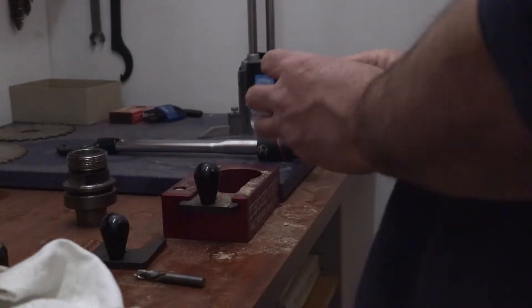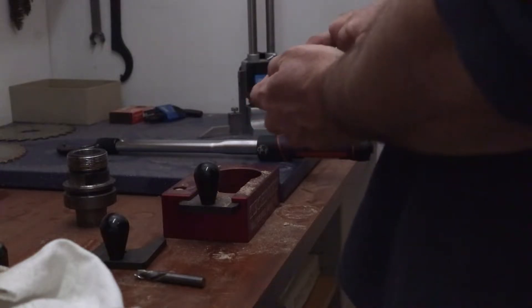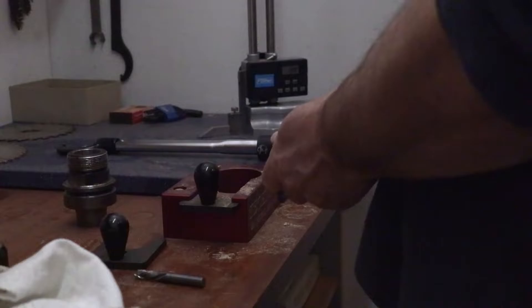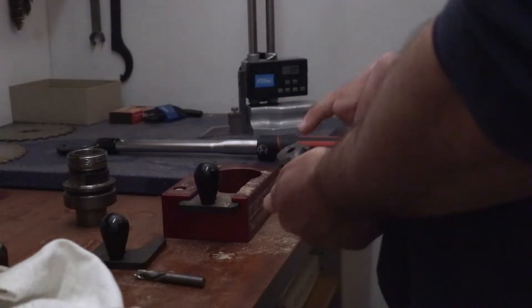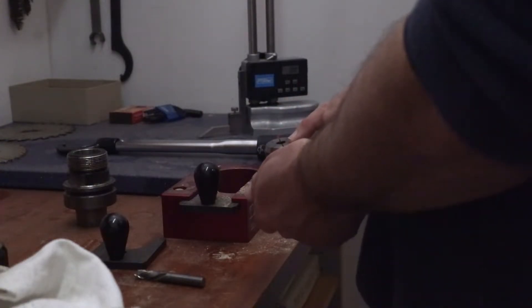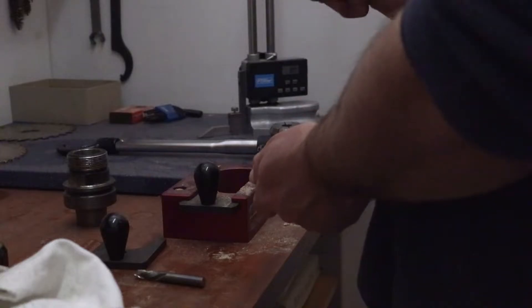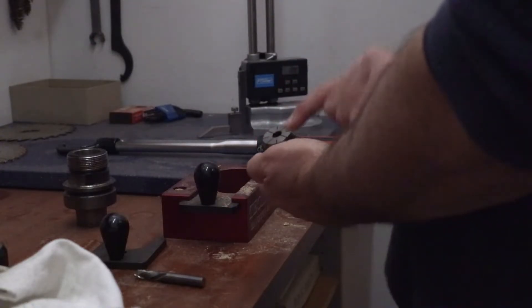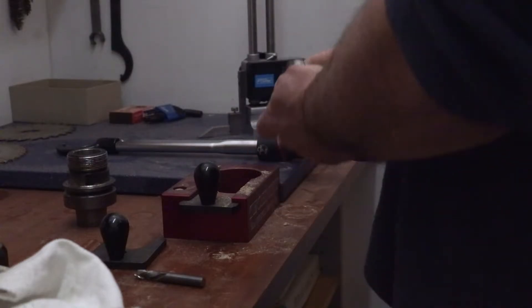Now, one of the things that we want to do when we get our collet back, when we clean it up, we want to check that we don't have a lot of polishing on the inside edge where the tool goes. Because that would indicate that the tools are slipping a little bit. We want to make sure that there's no wear right on that inside edge.